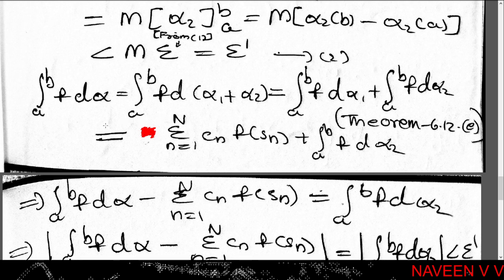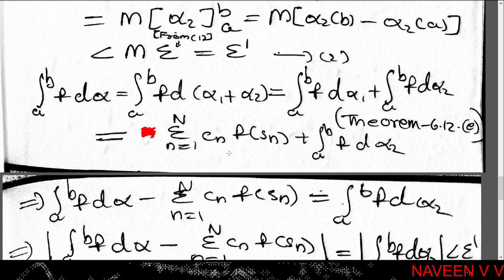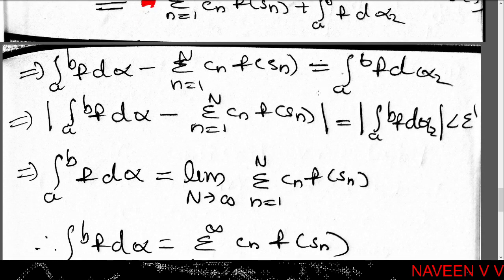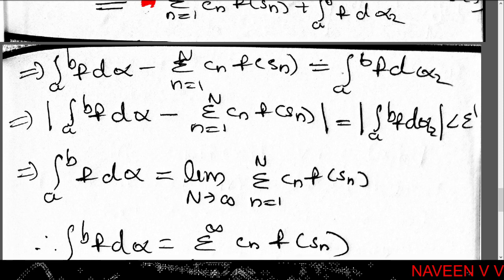Since α = α₁ + α₂, by theorem 6.12: ∫(a to b) f dα = ∫(a to b) f dα₁ + ∫(a to b) f dα₂. Since ∫(a to b) f dα₁ = Σ(n=1 to N) cₙ · f(sₙ), we get ∫(a to b) f dα = Σ(n=1 to N) cₙ · f(sₙ) + ∫(a to b) f dα₂. This implies |∫(a to b) f dα - Σ(n=1 to N) cₙ · f(sₙ)| = |∫(a to b) f dα₂| < ε.